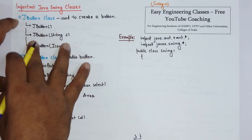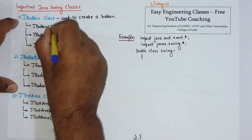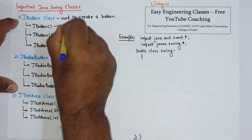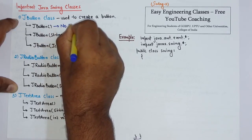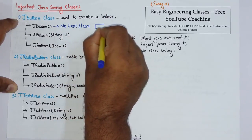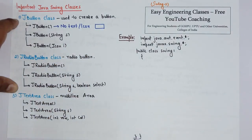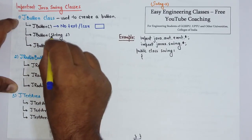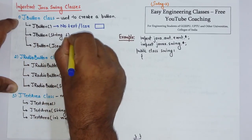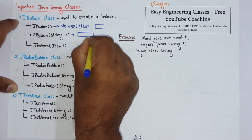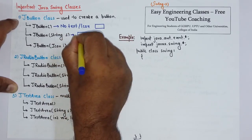So there are basically three constructors that you can use. First is JButton, it creates a button with no text and no icon, just a plain button will be created like this with no text on the button. Then we have a button with string S, so whatever string that you pass, that will appear on the button. For example, you have passed in S.